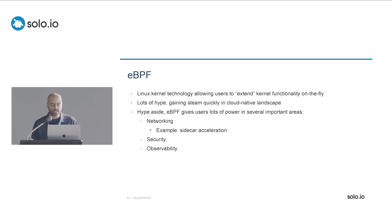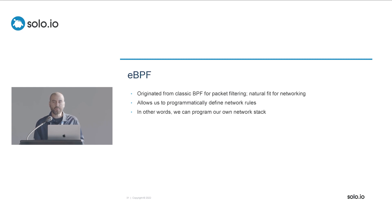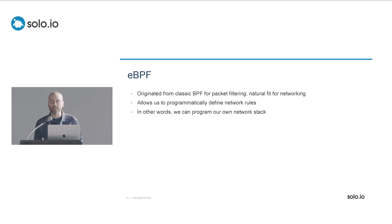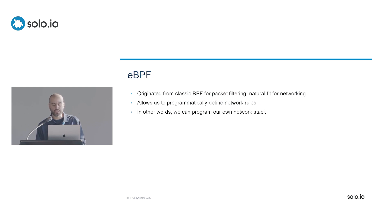eBPF also has a lot of value in security and observability. eBPF originated from classic BPF, which was designed for packet filtering — if you've ever used tcpdump, that was written with classic BPF for very quick packet filtering. The goal was to do a lot of processing as packets flow through the network stack inside the kernel, rather than copying every single packet out into user space. With eBPF, we can programmatically define our network rules — we can essentially program our own network stack, telling the kernel exactly what we want it to do for Ambient.